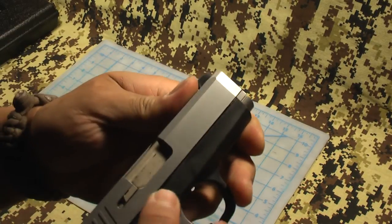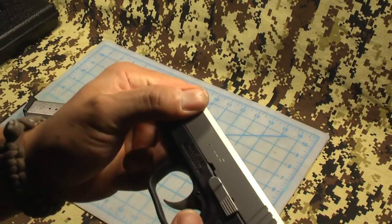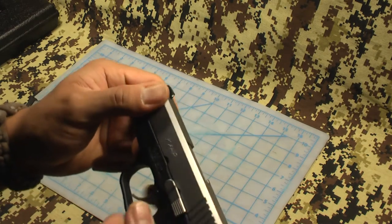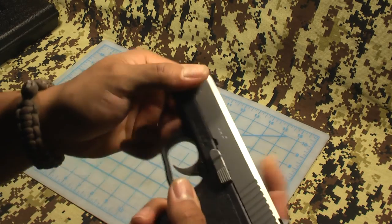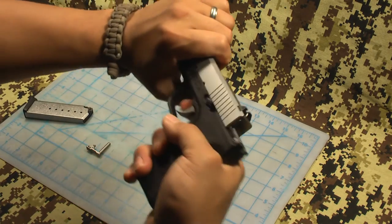Once you line those up, you push on this nub right here on the other side, which is the other end of the slide stop. Once that's back, slide that all the way out, pull the trigger.